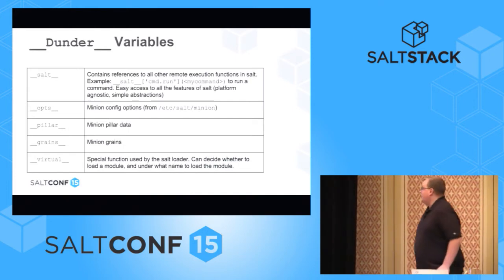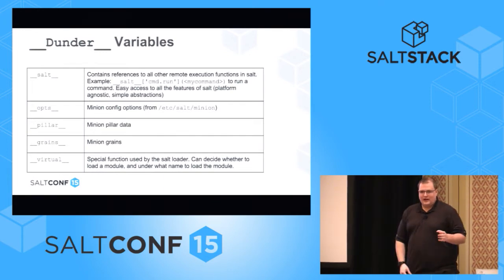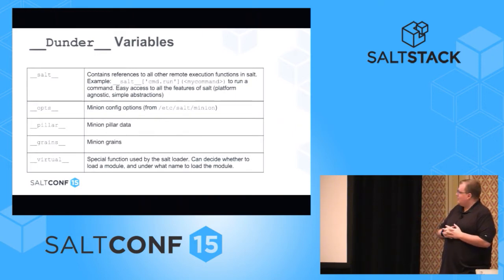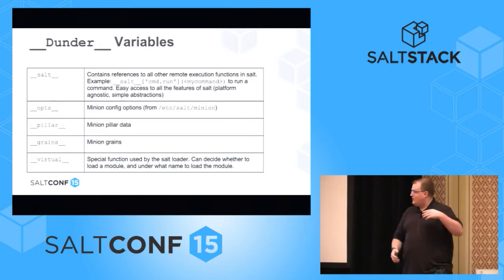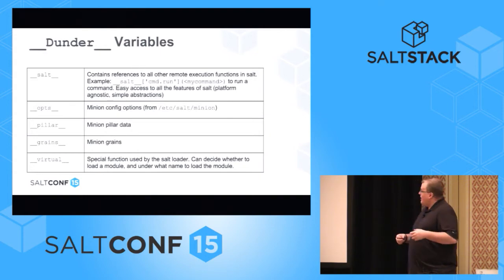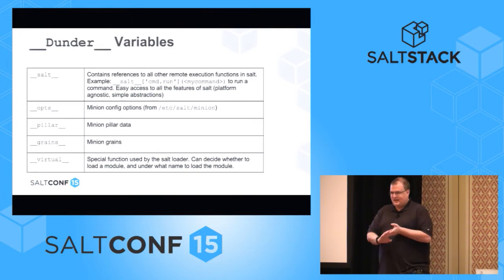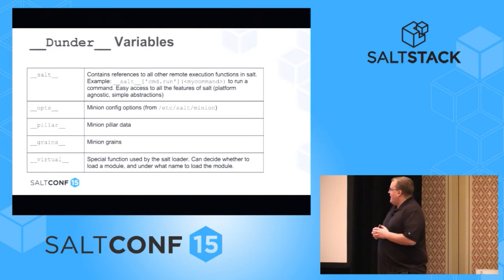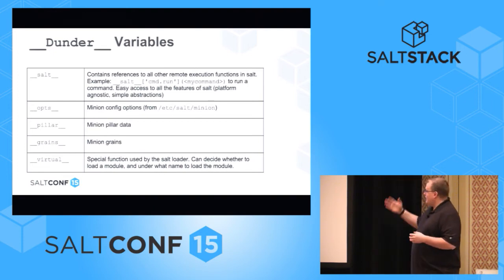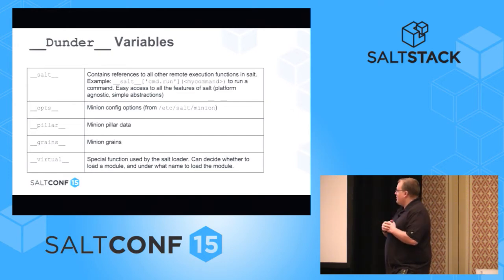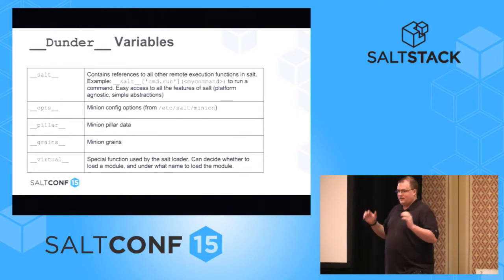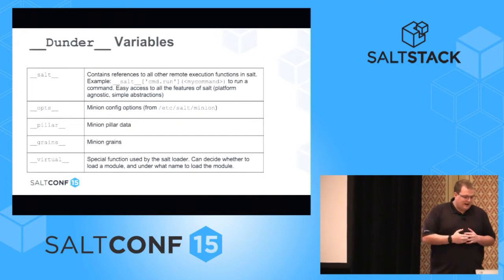We have our dunder variables. When I use the word 'dunder,' I'm talking about variables with double underscores before and after. We have opts, pillar, and grains — those are pretty straightforward, just the data from those various data structures. Dunder salt is, in my opinion, the coolest one. Inside of dunder salt, it's a dictionary in which we put all of the execution module functions in Salt. Inside that dictionary is a reference to cmd.run, config.get, test.ping — all of the loaded execution module functions. We load all those function objects into this dictionary and then we can call them, just using parentheses like any other function.